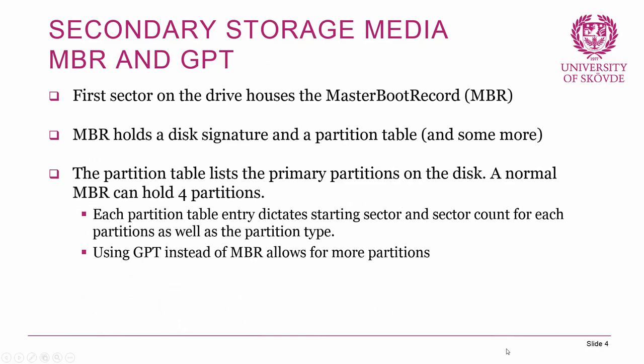The first sector on the hard drive always houses the master boot record. The master boot record primarily holds a disk signature and a partition table, and the partition table lists all the primary partitions on the disk. Using master boot record you can have four primary partitions. There is also another partitioning scheme called GUID Partition Table (GPT) that works similarly but allows for more partitions. The partition table contains entries that dictate the starting sector and sector count for each partition, and it can also tell us the partition type.